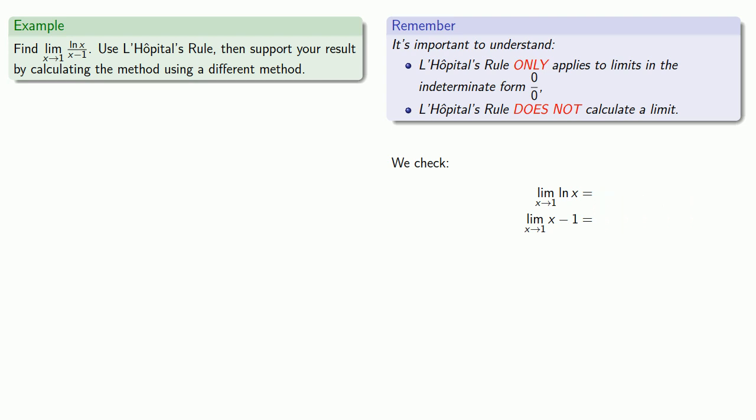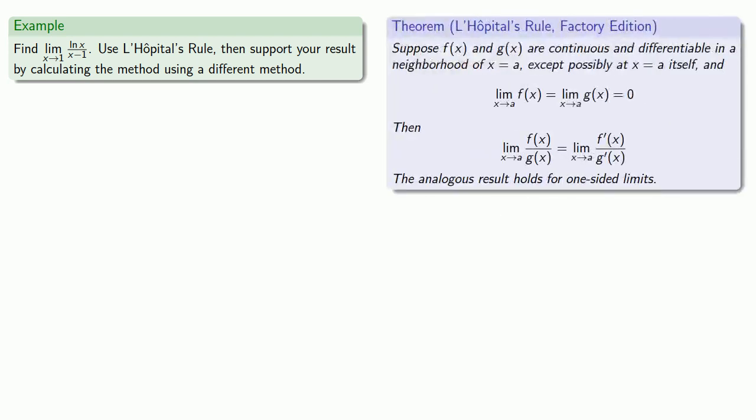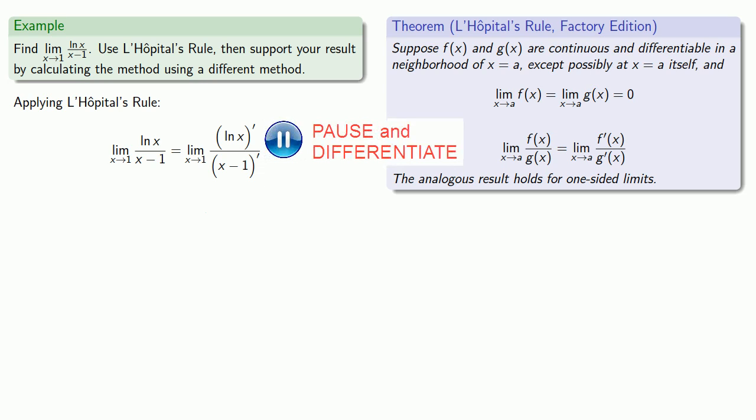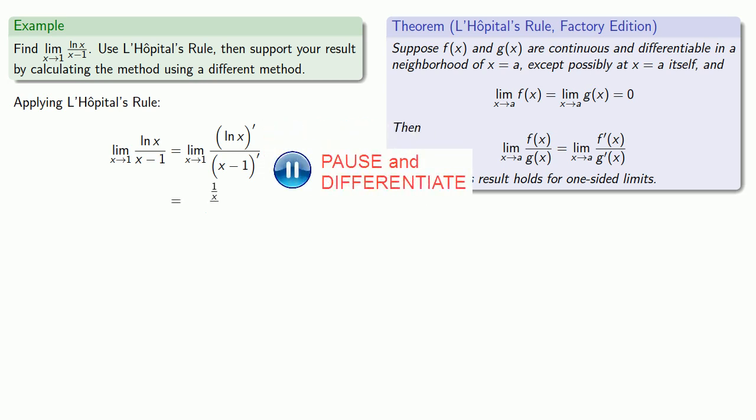And we see that as x goes to 1, log x goes to 0, and x minus 1 also goes to 0. So this is something we can use L'Hôpital's rule on. So we'll apply L'Hôpital's rule. That's the derivative of log over the derivative of x minus 1. So we'll take the derivative of log, the derivative of x minus 1, which simplifies.